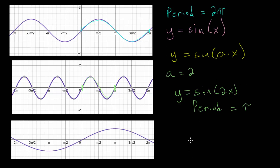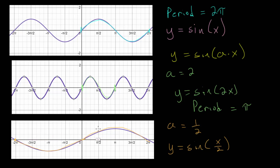We also looked at what happens when a is a fraction — y = sin(x/2) or sin(½x). To find the period, we travel from one point through a minimum, through the midline, back through the maximum, and to the midline again for one unique oscillation. That gives a horizontal distance of 4π, since there are two sections each of 2π.